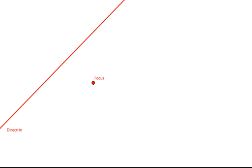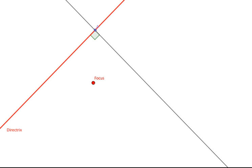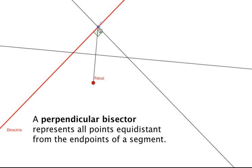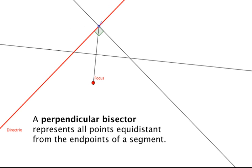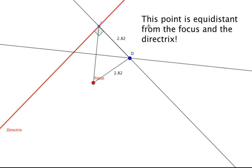So now let's take a focus and a directrix and construct the locus of points that represent the parabola. First we're going to choose a point on the directrix. Then we're going to construct the perpendicular line that goes through that point and is perpendicular to the directrix. Next, we're going to construct the segment between this point and the focus, and then construct the perpendicular bisector, which represents all points equidistant between this point of intersection and the focus. You can see where this perpendicular line and this perpendicular bisector intersect, and we know that this point is on the parabola. So we've constructed one point on the parabola, and if we move this arbitrary point on the directrix around, we can start constructing more points on the parabola.